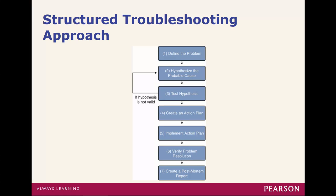Here's more of a structure: define the problem, hypothesize, test, loop if necessary, then create an action plan. Make sure you have the appropriate permissions to do what you need to fix the issue. Implement the action plan — part of creation might also include a fallback plan just in case. That way, if implementation occurs and it's a disaster, you know how to recover. Step five is implement. Step six is verify problem resolution with the user or stakeholders. And then last, create a post-mortem report.